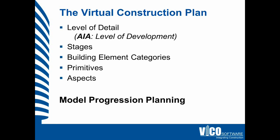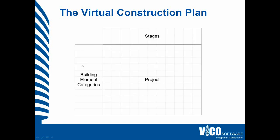So when we develop the virtual construction plan, just like when we plan for actual construction, we create a model progression plan that includes these items and we start to refer to the primitives. We start off by defining the categories that we would like to recognize in the project — the building element categories are shown here to the left.